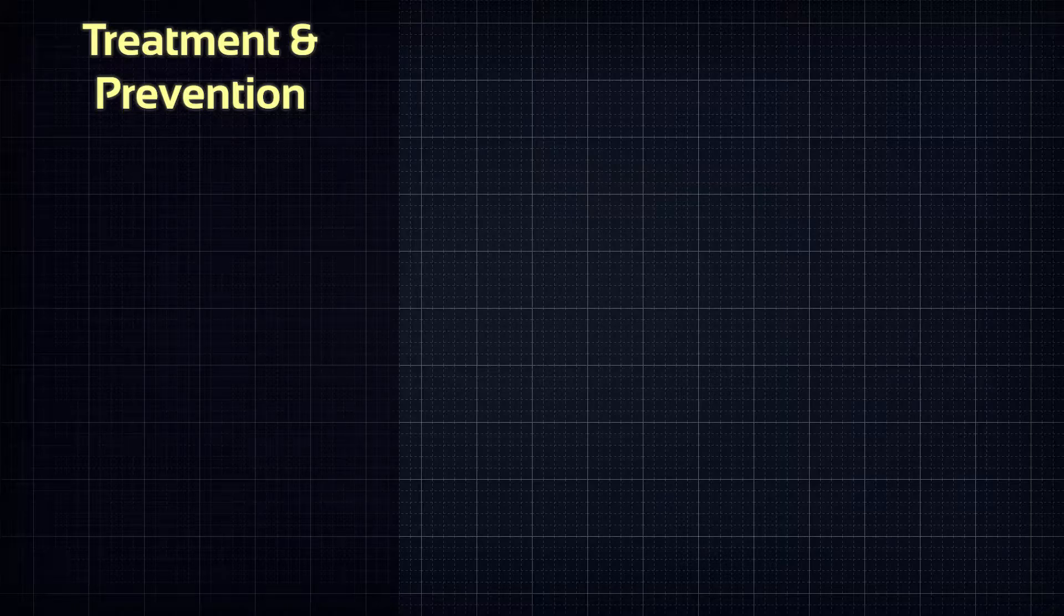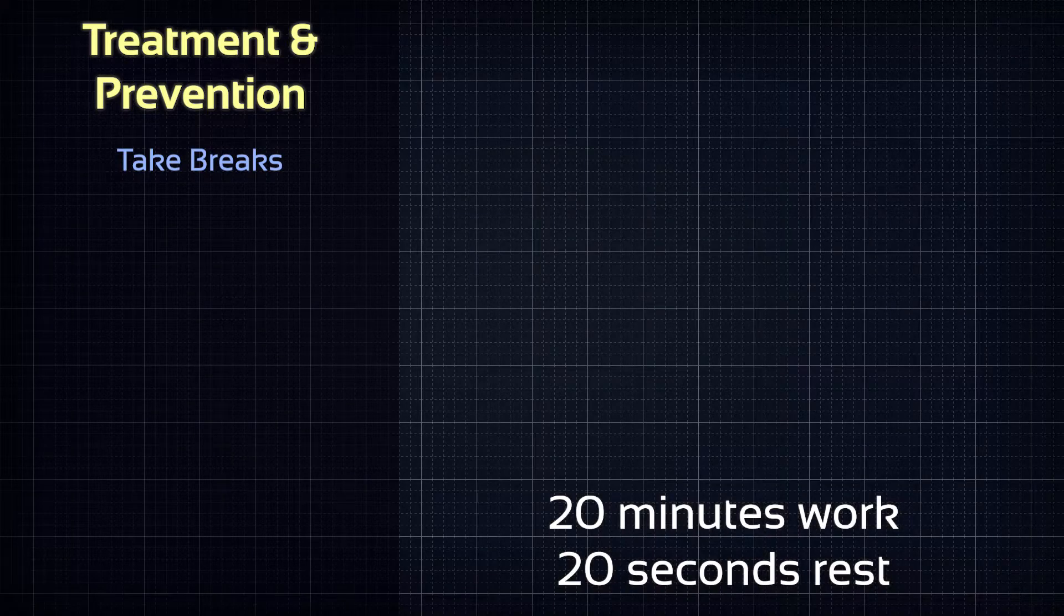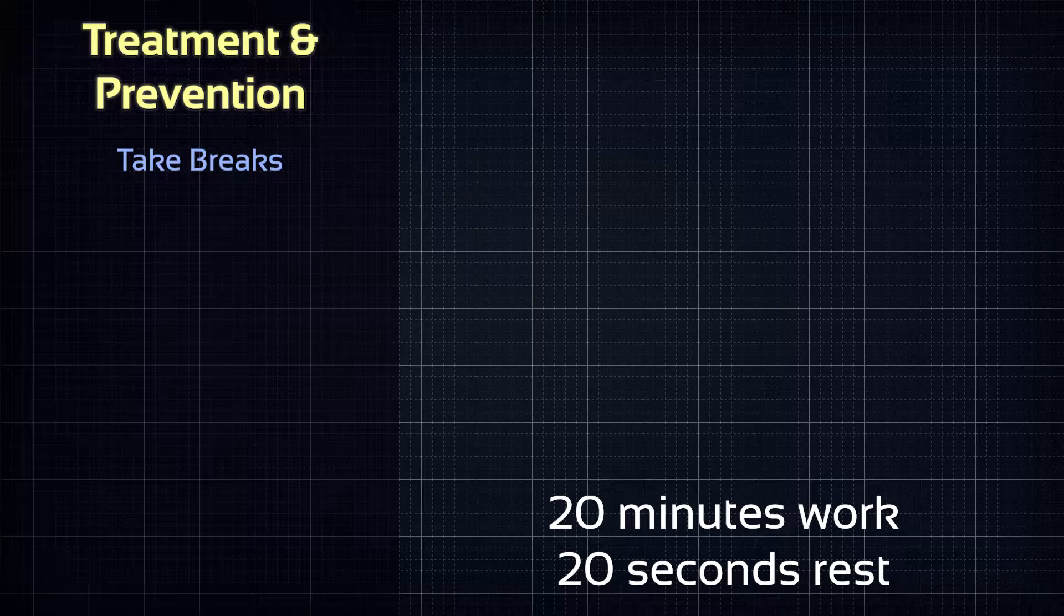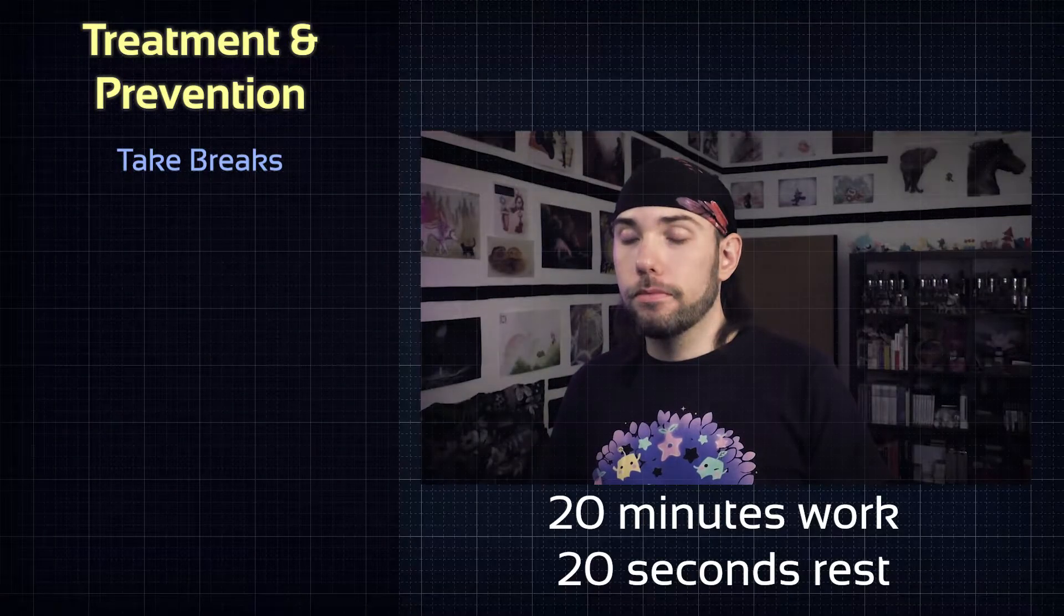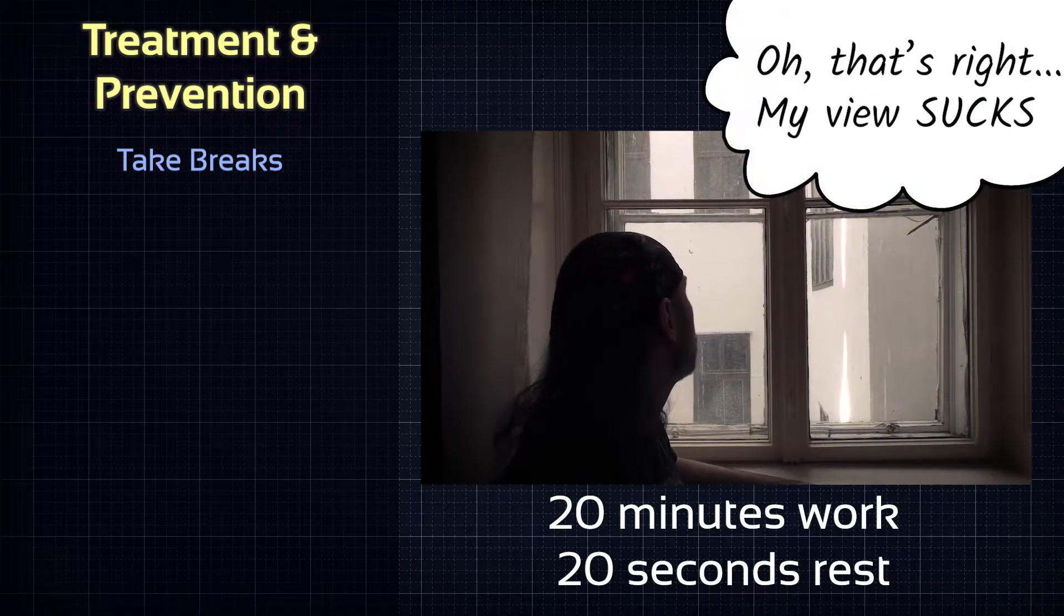So what should you do in order to treat and even prevent eye strain? The most recommended method is very simple: take regular breaks. A lot of experts say that a 20-20 approach would be good. After 20 minutes of eye straining work, close your eyes or look at a simple non-moving object in the distance for 20 seconds or longer.